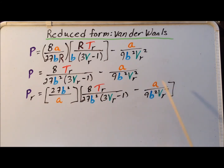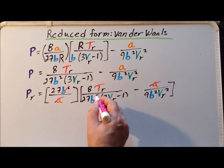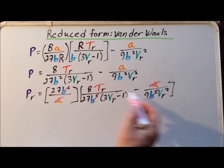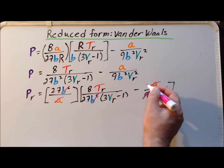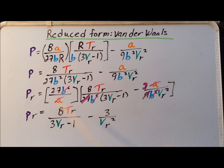Even though this seems like a complicated expression, a number of quantities simplify. First, the a's cancel. Second, the b squareds cancel. Finally, 27 cancels 27 for the first term, and 27 with 9 leaves 3. So we get that the reduced pressure p sub r equals 8t sub r divided by 3v sub r minus 1, minus 3 over v sub r squared. In this form, all quantities are reduced and we have eliminated the van der Waals constants a and b, which are specific to individual gases — giving a generic equation true for all van der Waals gases.